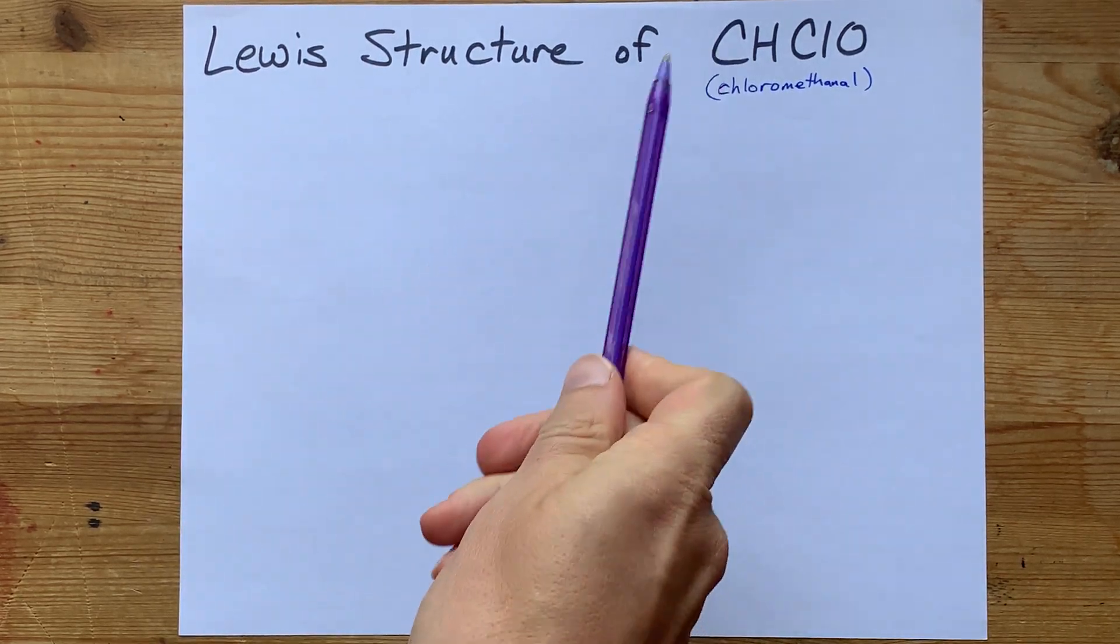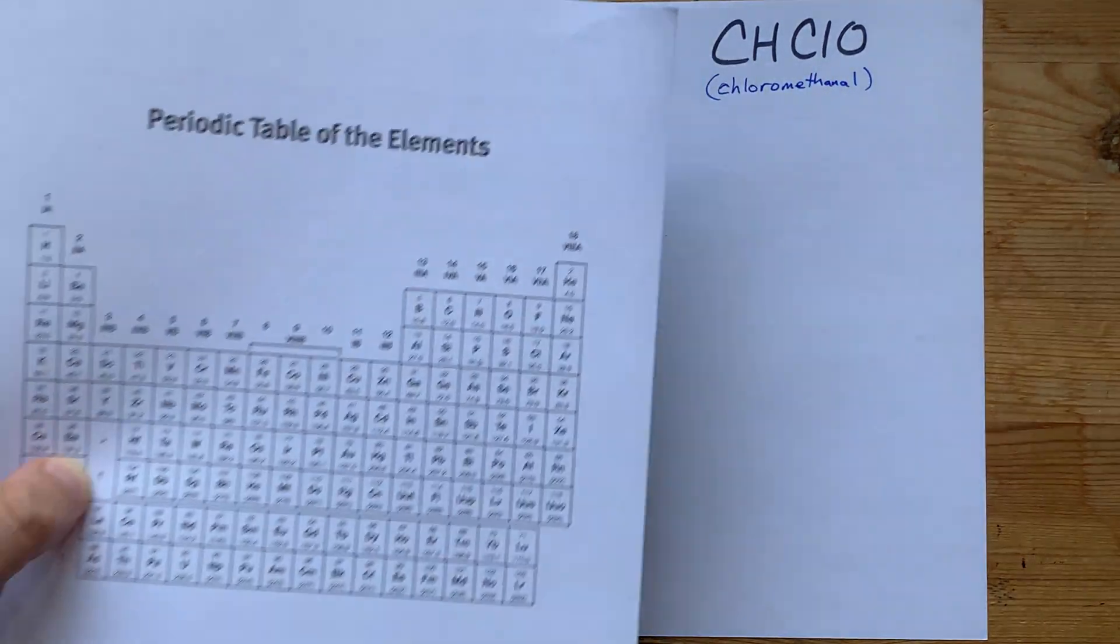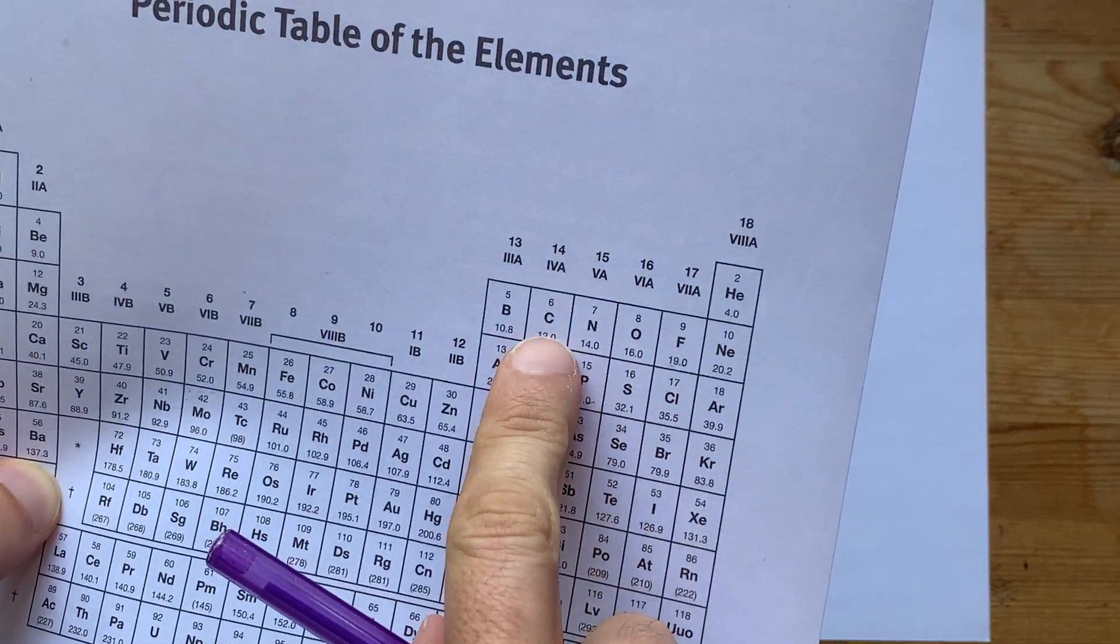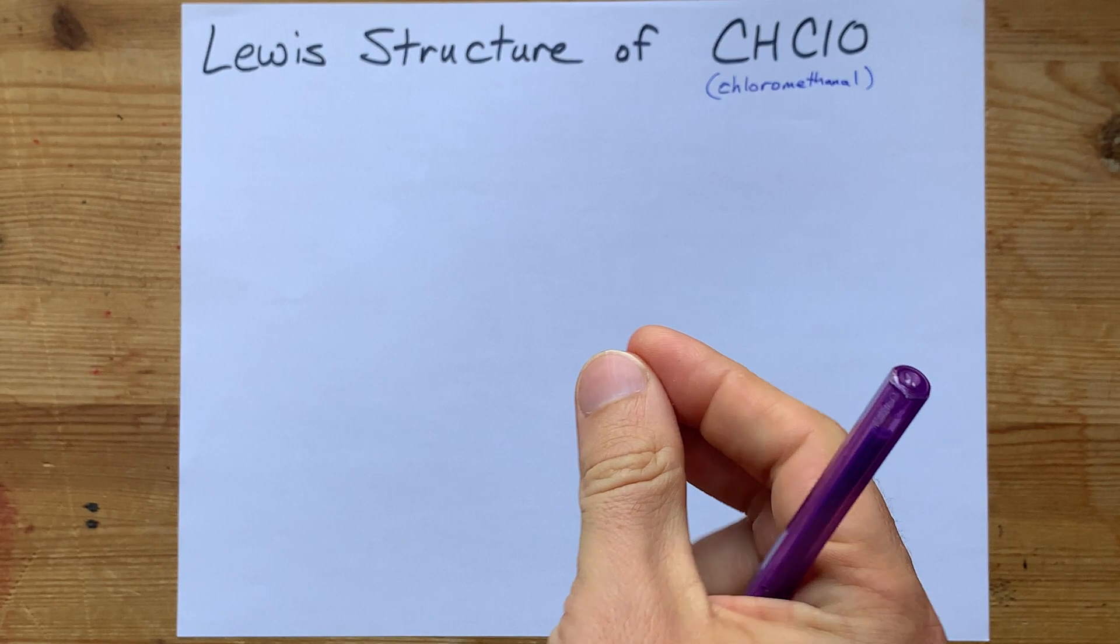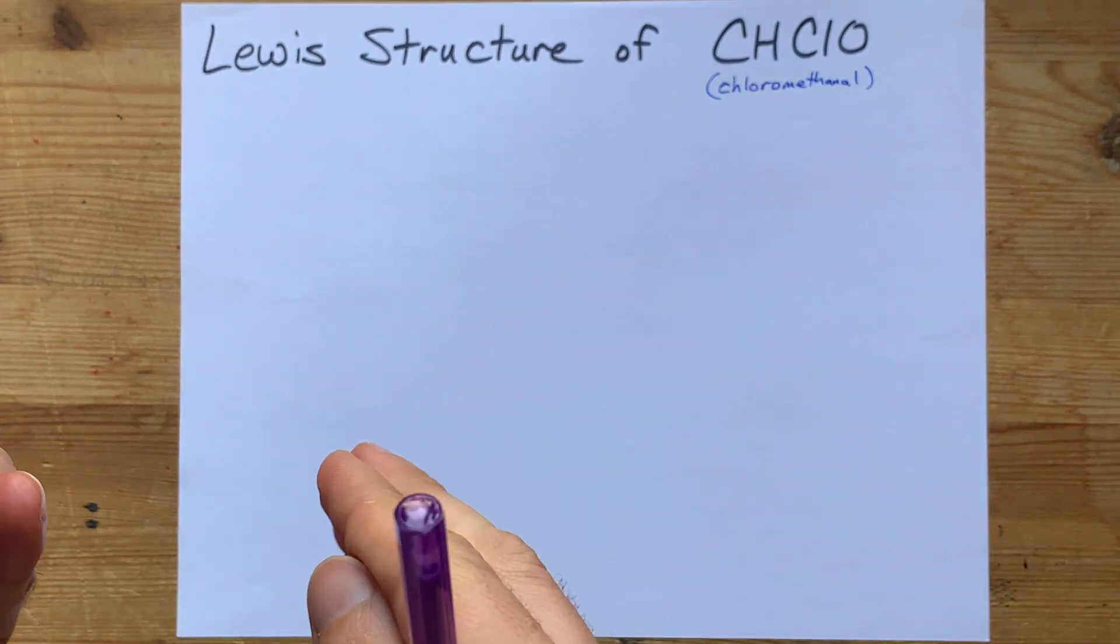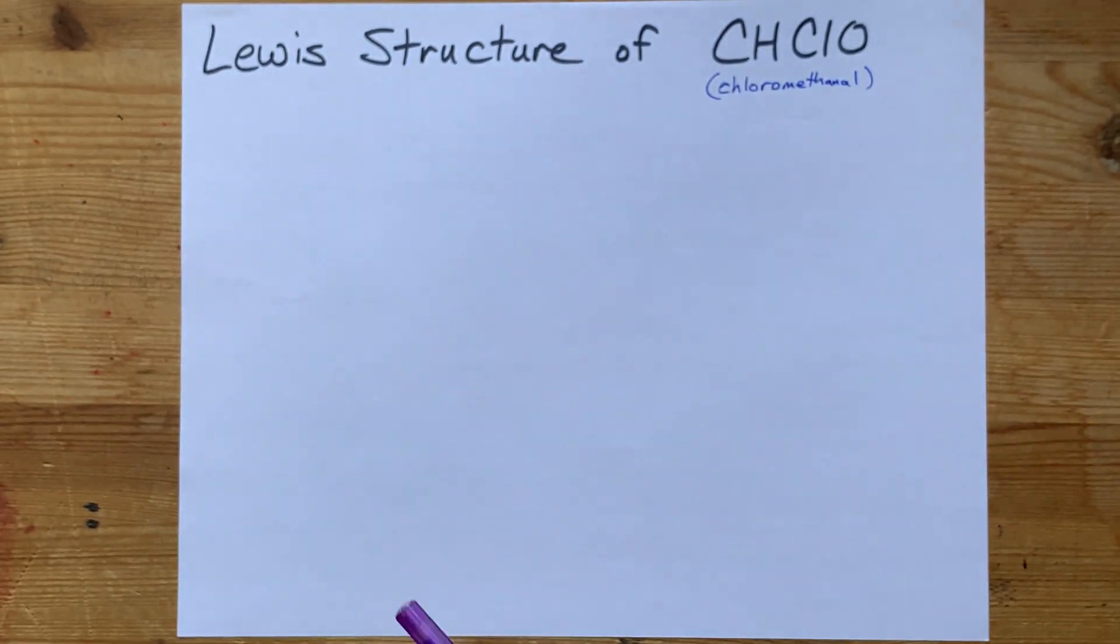We're going to draw the Lewis structure for CHClO. I just want to point out that carbon, oxygen, chlorine, and hydrogen are all non-metals, so these things will be sharing electrons to complete each other's octets.